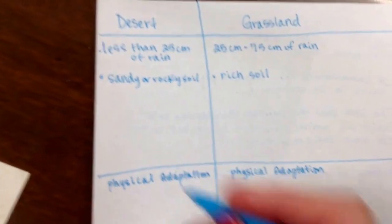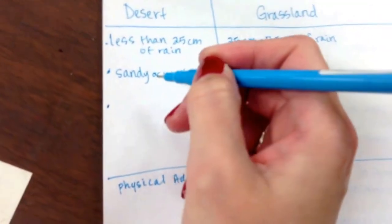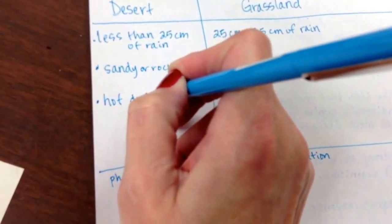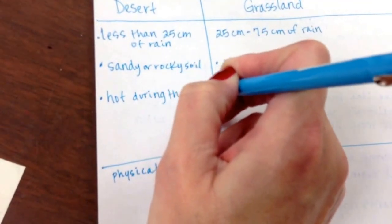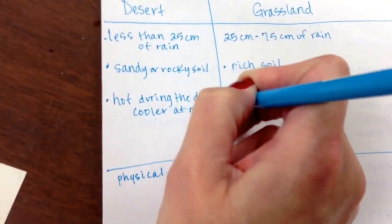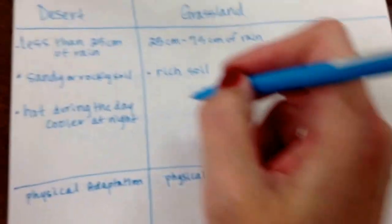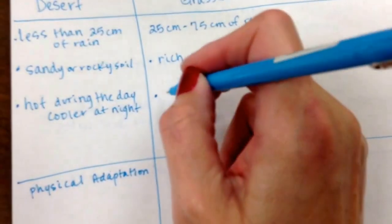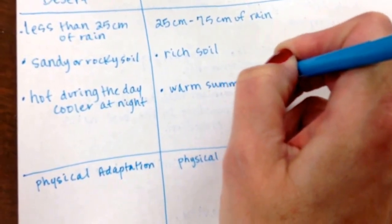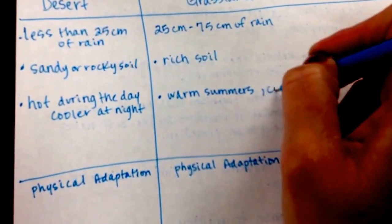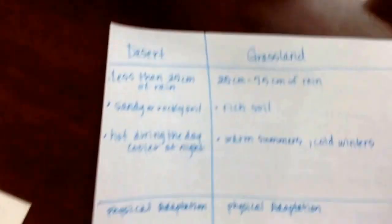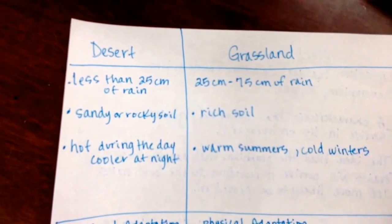Let's talk about the weather. What's the temperatures like during the day to night in the desert? Most of us know it's hot during the day, cooler at night. And in the grassland you're going to have actually some seasons. You're going to have warm summers and you're going to have cold winters. So you're going to have a variety of weather through the year.